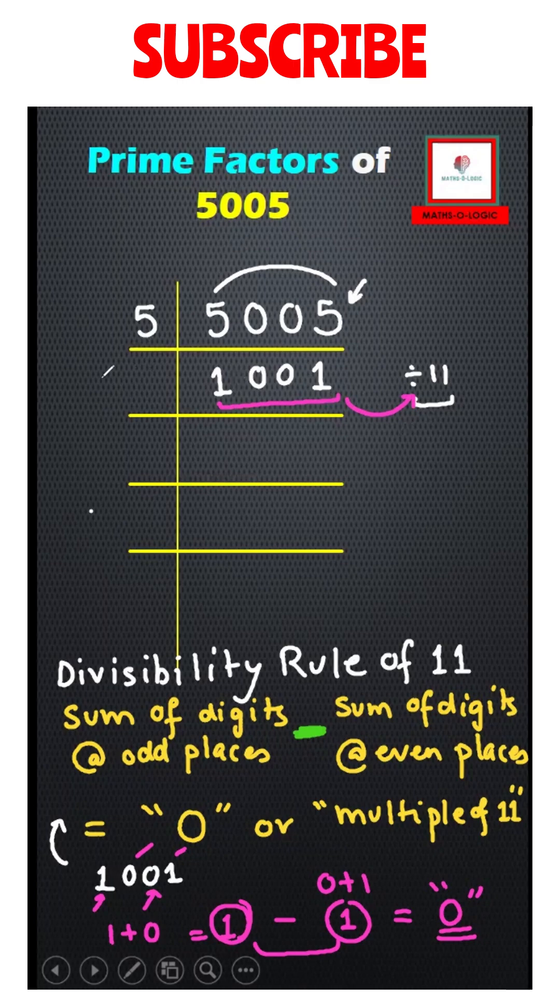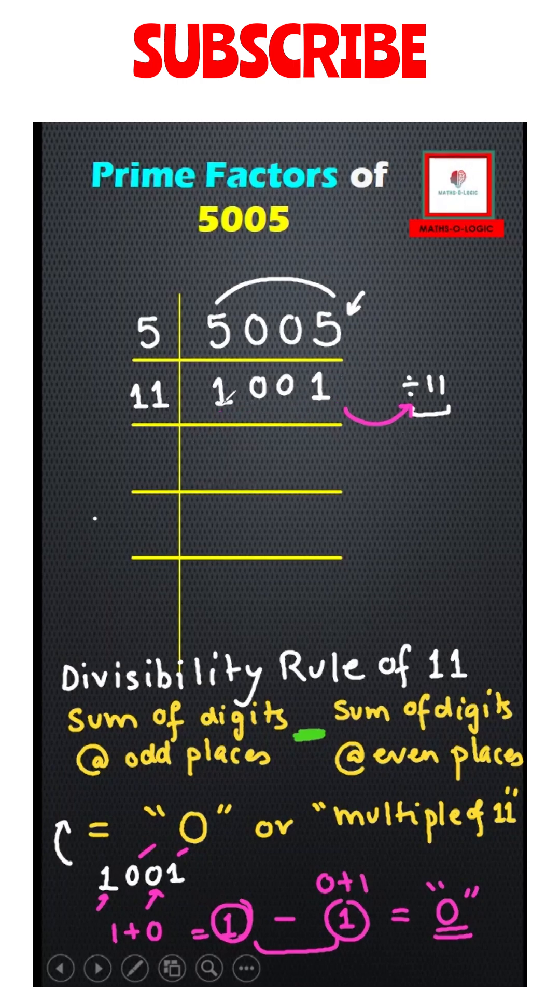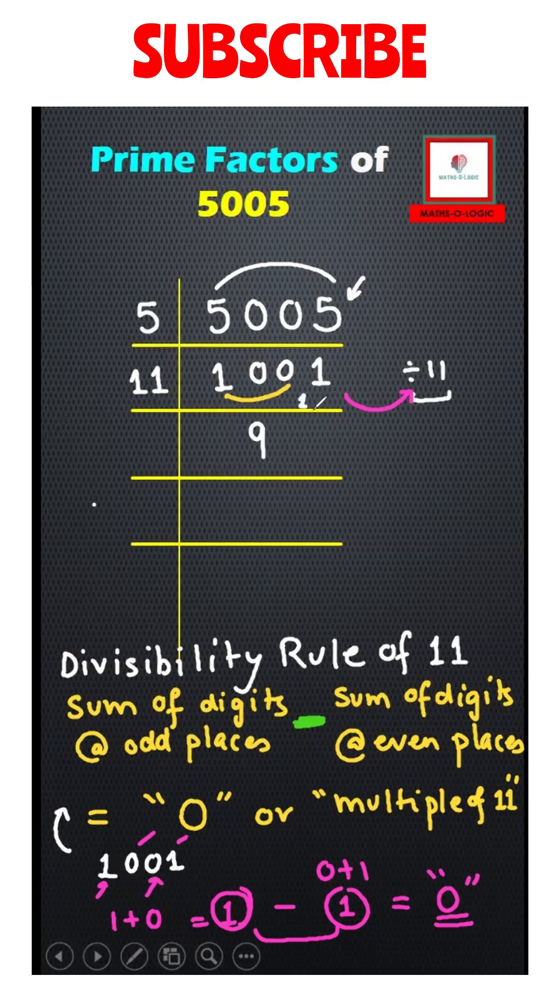The next prime number I get is 11, and let's start dividing. I'll take 100 together. 11 times 9 is 99, what I am left with is 1 as a remainder.